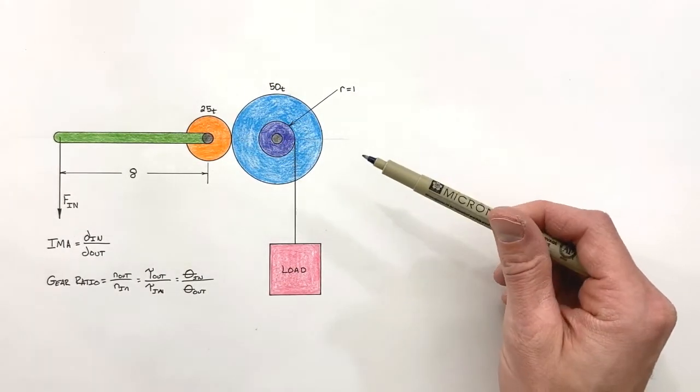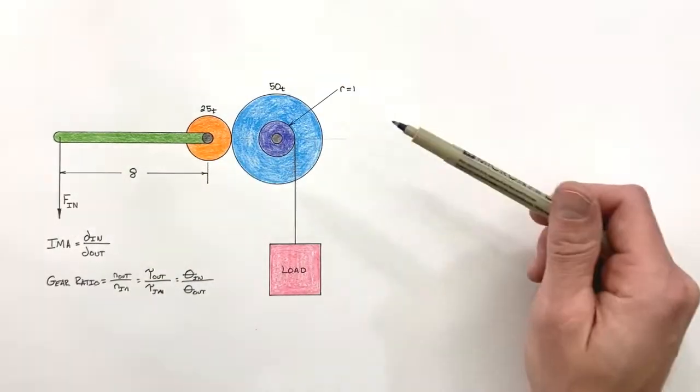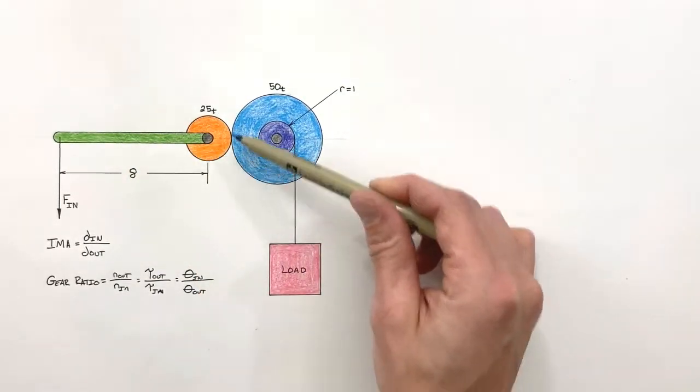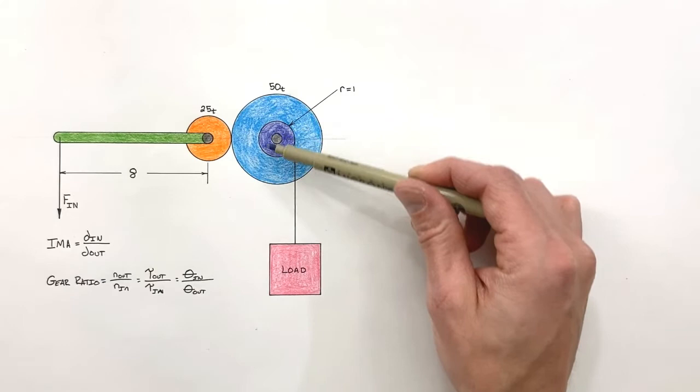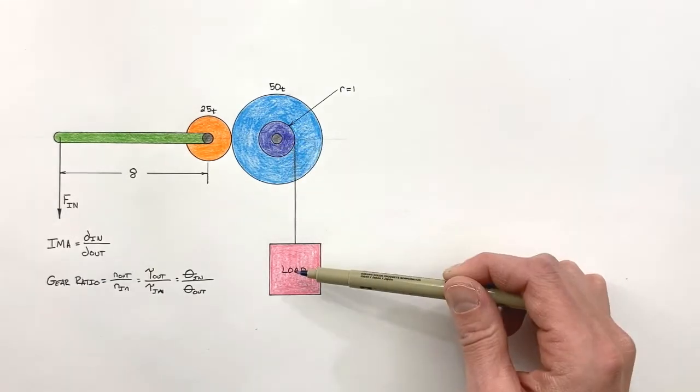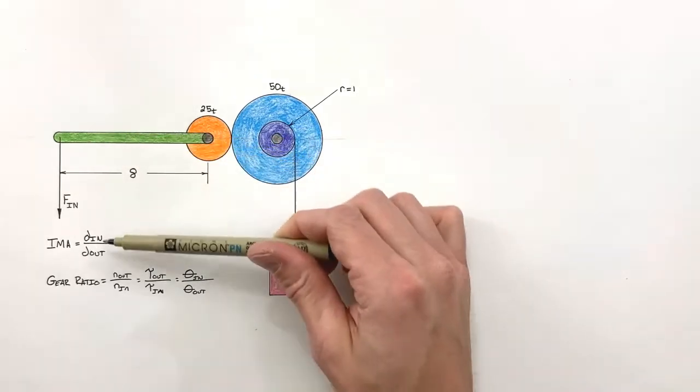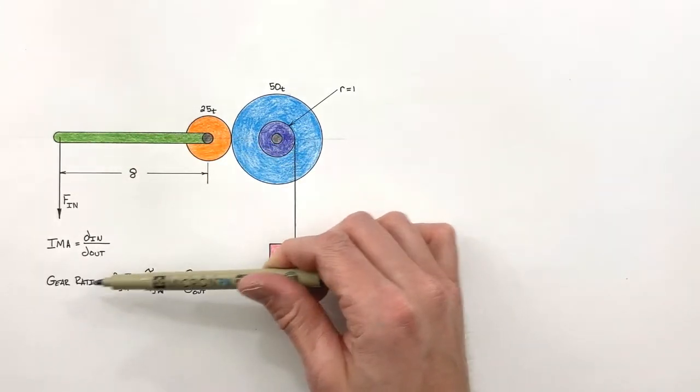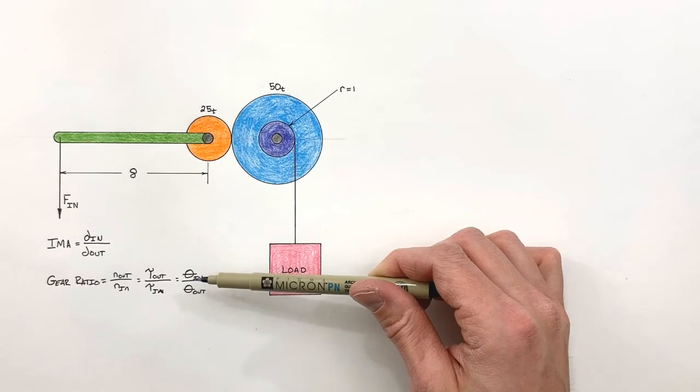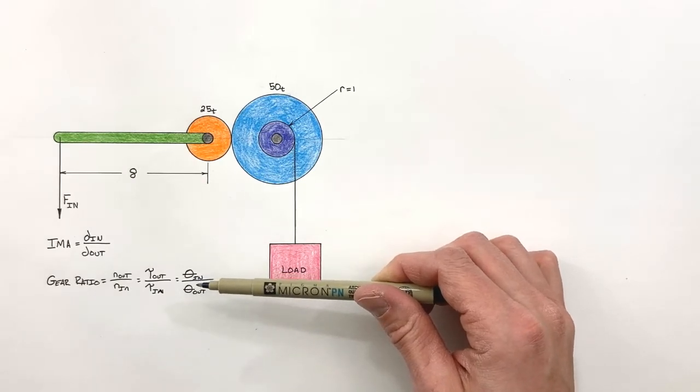And so the issue that comes up when dealing with a compound machine like this, where we have a lever turning a gear set, which is in turn rotating a drum connected to a load, we have to deal with both simple machines in terms of linear quantities, as well as dealing with our gears, which are entirely rotational quantities.